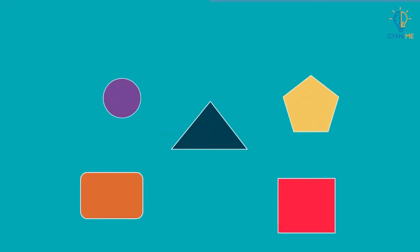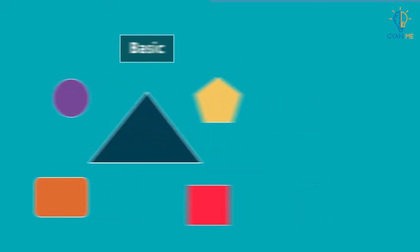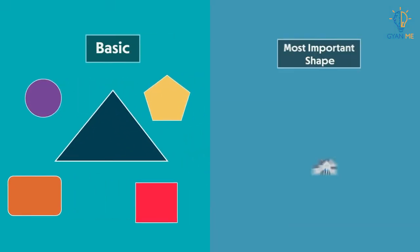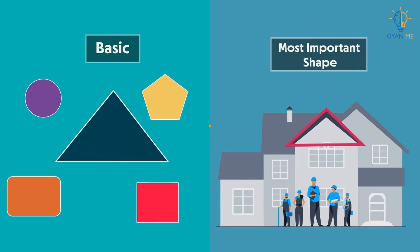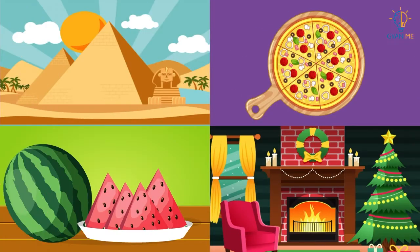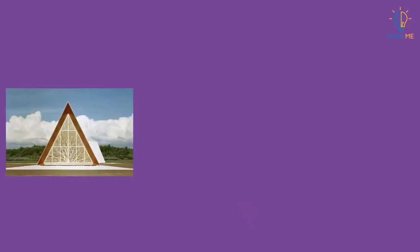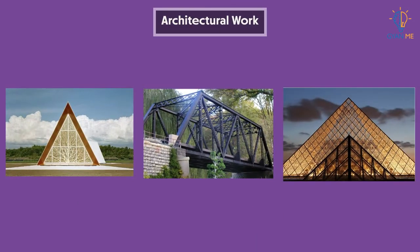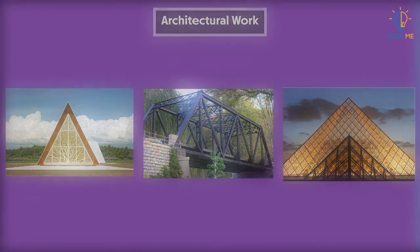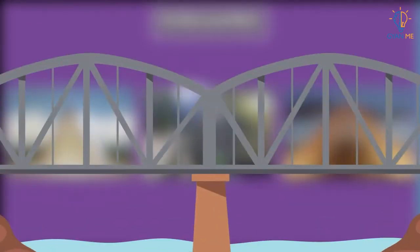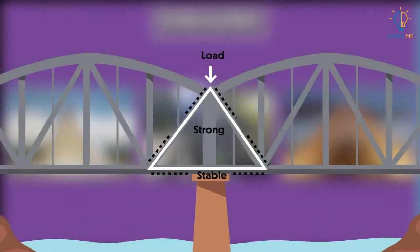Hello students. Triangle is one of the basic and most important shapes in geometry. Triangular shapes are formed all over the place. They occur in a lot of architectural works, primarily because they are one of the most stable and strongest shapes.